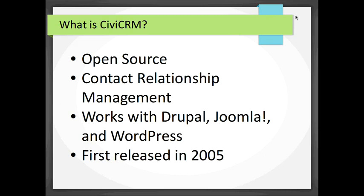CiviCRM is open source, which means it's free to download and community-contributed. While there are people who work on the core team, a lot of the changes and bug fixes are made by people like myself and my colleagues. It's a CRM — Contact Relationship Management — which can also stand for Constituent or Customer Relationship Management depending on context. It works with Drupal, Joomla, and WordPress, and was first released ten years ago.